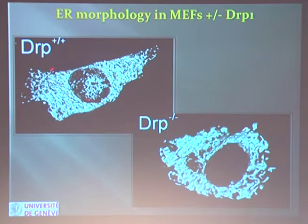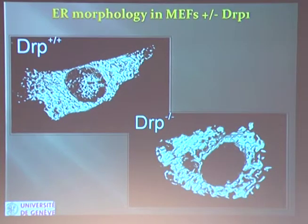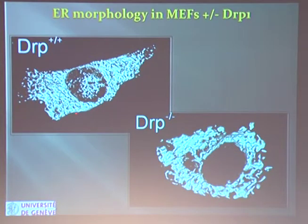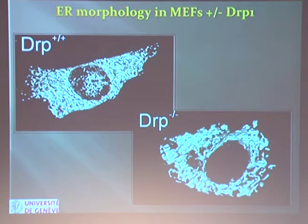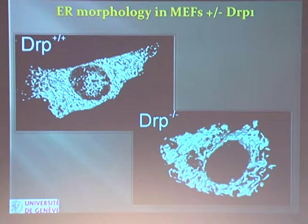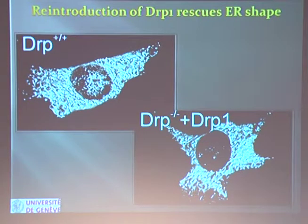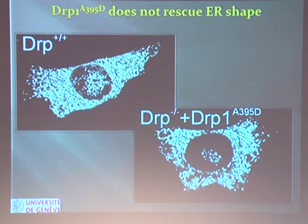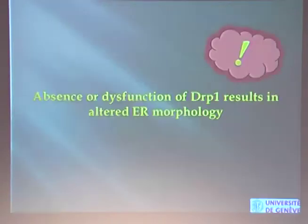The answer was visible in cells where the endoplasmic reticulum is tracked by a fluorescent protein targeted to this organelle. In a normal cell, the endoplasmic reticulum is distributed within the cell as a very homogeneous network covering all the cell. If you delete DRP1, you see the network is disrupted — you have clumps of endoplasmic reticulum and it is no longer homogeneous. If you reintroduce normal DRP1, you reconstitute the network; if you reintroduce the mutation, the network is again not homogeneous, like in DRP1-deprived cells. So the absence of functional DRP1 results in an altered morphology of the endoplasmic reticulum.